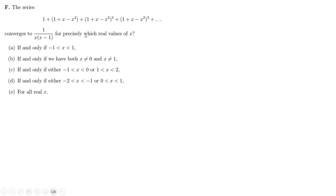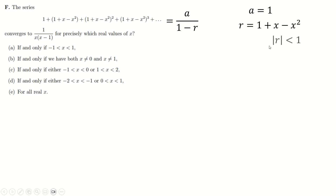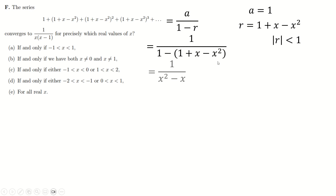For part F, we've got a geometric series with first term 1 and ratio (1 + x − x²). That converges according to the formula as long as the absolute value of R is less than 1. First I check that this turns into the right expression. A is 1, R is (1 + x − x²). Putting that into the A/(1−R) formula: things cancel and factorize, so the series does give the right function — as long as the convergence condition is met.